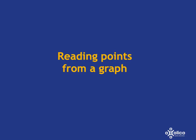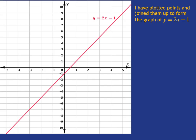We can have a look at reading points from a graph. So here I have the graph of y equals 2x minus 1. I've already drawn it for you. I drew it up by taking some values for x, plugging them in that equation, working out the y, drawing up that sort of table of values, then plotting the points on the graph, joining them up. So I've drawn it for you already.